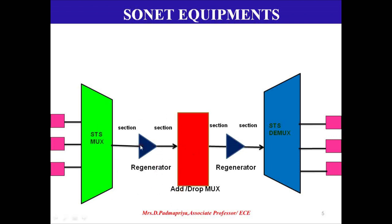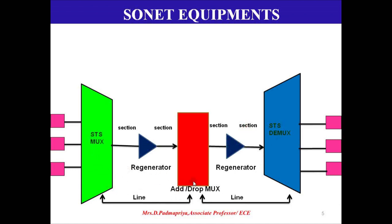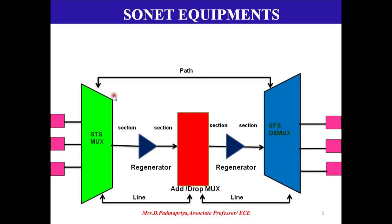The data flow between a regenerator and the adjacent SONET device ADM is also done in the section layer. Similarly, the data flow between add-drop mux and the regenerator, as well as between the regenerator and STS D MUX, is done in the section layer. The communication between STS MUX and the add-drop mux is done in the line layer. The line layer takes care of data flow between one STS MUX and add-drop mux. The path layer takes care of communication between source and destination — that is, between STS MUX at the transmitting side and STS D MUX at the receiving end.